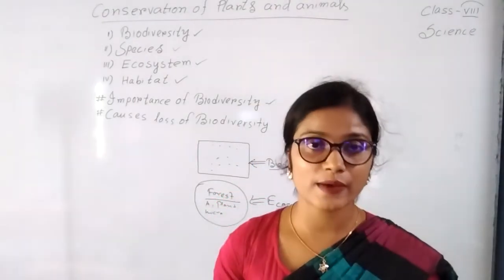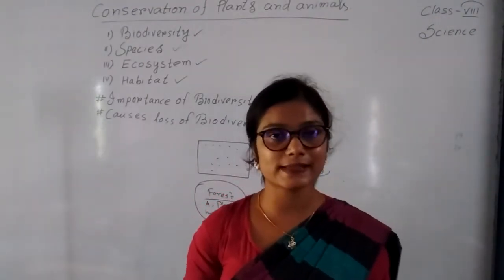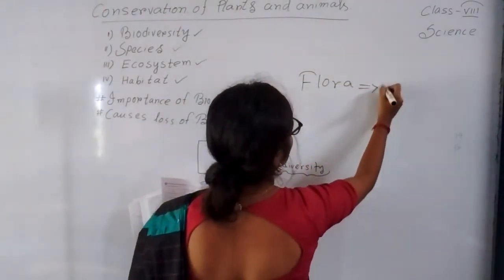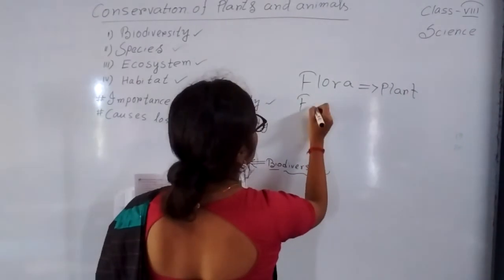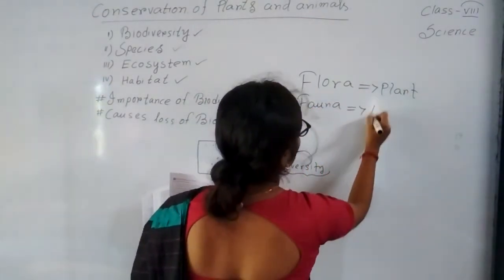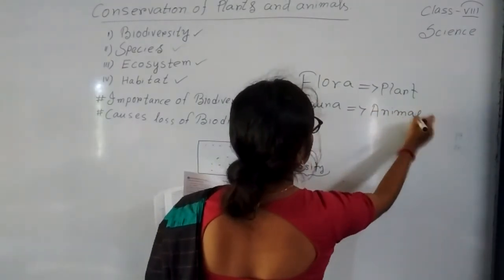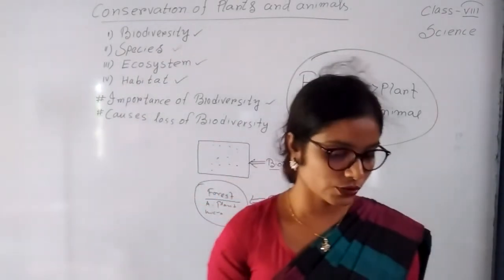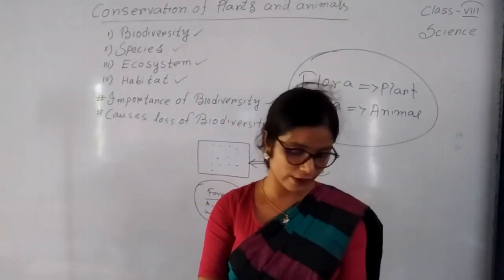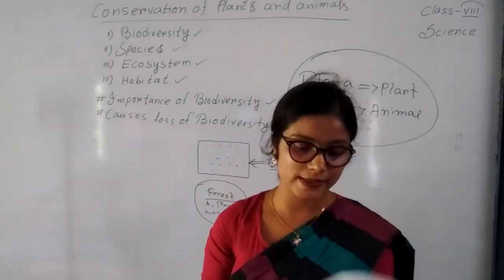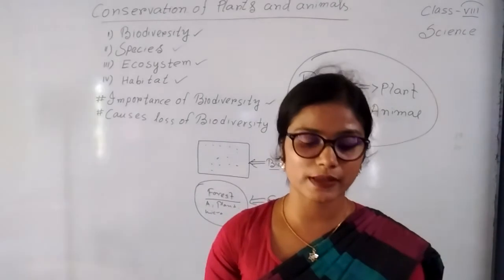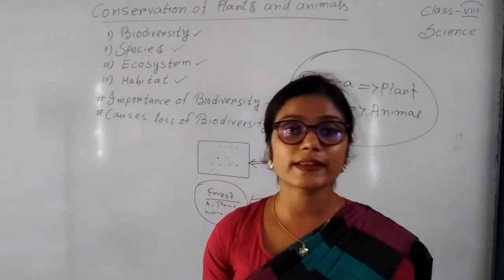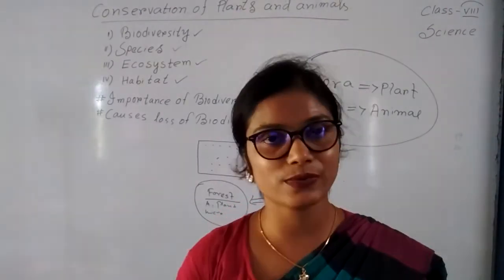Now, flora and fauna. In a forest we can see both plants and animals. Flora means plants and fauna means animals. In a forest we can see both flora and fauna. Please read the flora and fauna section on page number 106. In the next session I will discuss in more detail topics like extinction — why certain species are extinct and why they are in danger. Thank you, students.